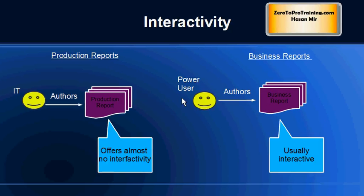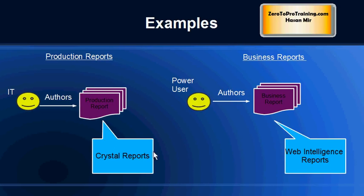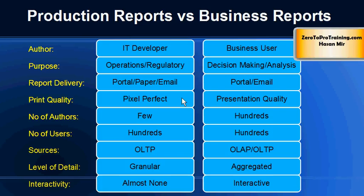Production reports are typically not interactive — you cannot click on numbers to drill down — but business reports are usually interactive. As an example from the SAP world, Crystal Reports is a tool that typically produces production reports, while Web Intelligence is a tool that produces business reports. Both are part of SAP Business Objects, which is business intelligence software from SAP. This is a summary of what we have discussed about production reports and business reports. In coming sessions our focus will shift more towards SAP Business Objects.